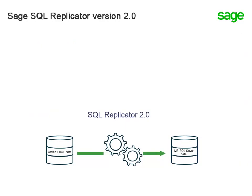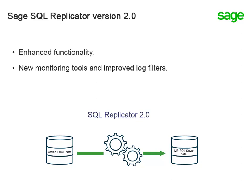A new version of SQL Replicator comes with Sage 300 CRE version 20.1. Sage SQL Replicator version 2.0 has enhanced functionality, new monitoring tools, and improved log filters.